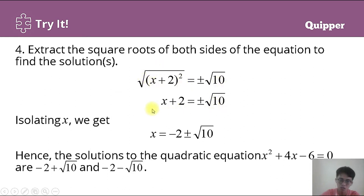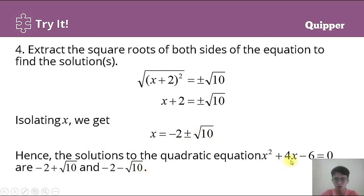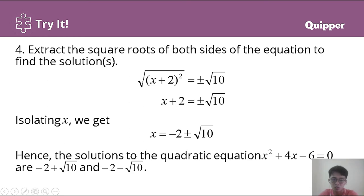Transposing and combining like terms, x = −2 ± √10. Therefore, the solutions to the quadratic equation x² + 4x − 6 = 0 are x = −2 + √10 and x = −2 − √10. That is how we perform completing the square.